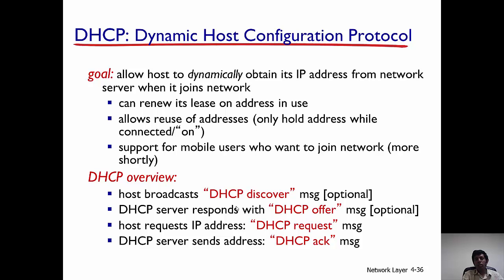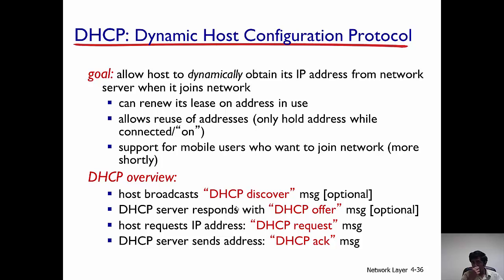So how does DHCP work? First, the host broadcasts a DHCP discover message — basically the host entering the network is trying to find out if there is a DHCP server. The DHCP server then responds with a DHCP offer message. Then the host sends a DHCP request for an IP address, and then the DHCP server sends a DHCP acknowledgement message and sends an address to the host.